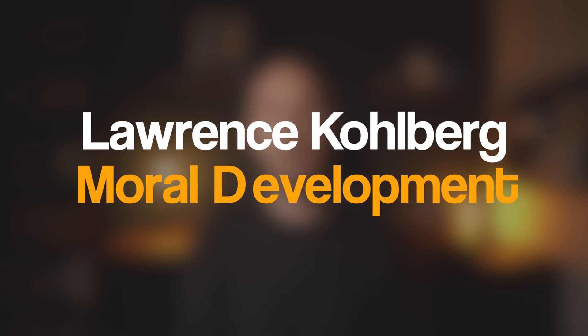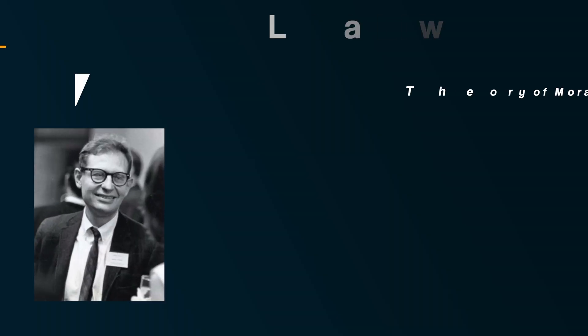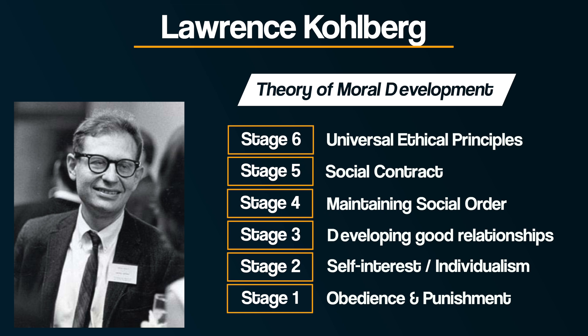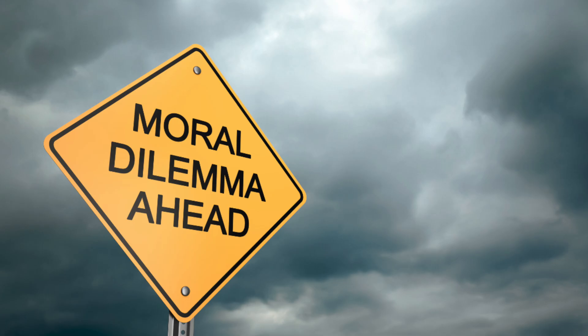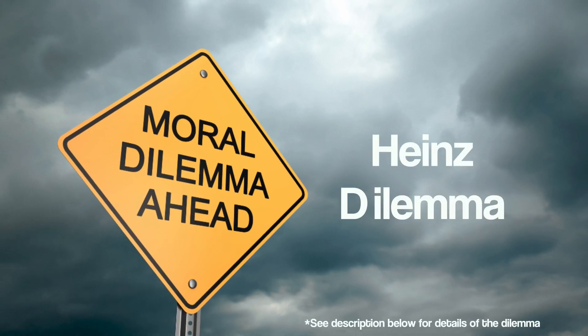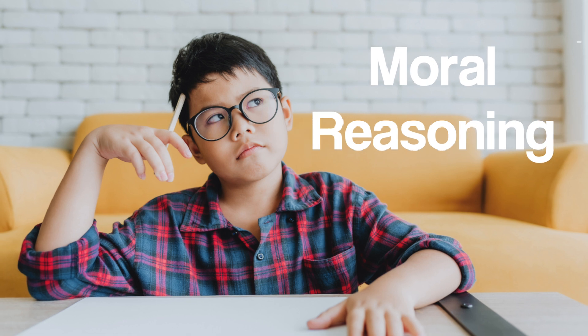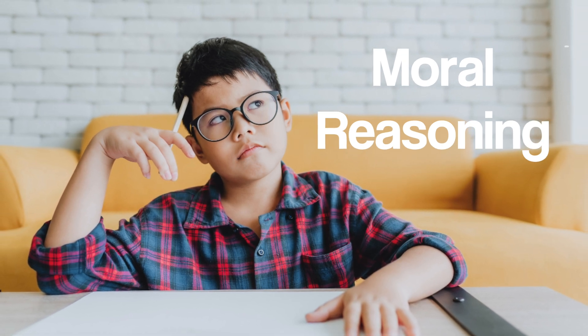Now we come to beta bias, this time with the research of Lawrence Kohlberg. Beta bias is where we minimise the differences between men and women. Kohlberg proposed a theory of moral development, outlining a series of stages that children go through, with each stage increasing in its level of morality — the higher the stage, the more developed you are in terms of moral reasoning. To research a child's understanding of morality, Kohlberg presented them with various moral dilemmas, one of the most famous being the Heinz Dilemma. He wasn't particularly interested in what children thought Heinz should do, but more in why — the emphasis was on how children thought and reasoned about morality.